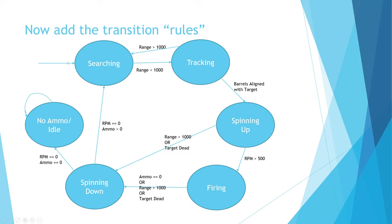There's only one way to get out of searching mode, and that is if the range to a target is less than a thousand — we then move to tracking mode. In tracking, we're turning the barrel smoothly to line up with the airplane or whatever it is. If the target goes out of range — range larger than a thousand — we go back to searching. And if the barrels are aligned with the target, we then leave tracking and start spinning up our gun.